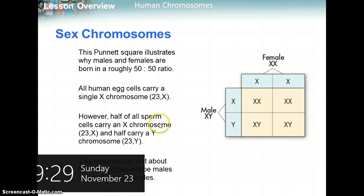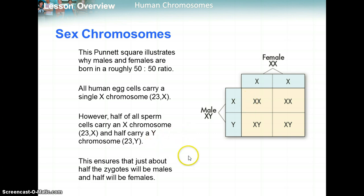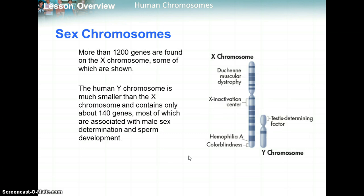If a Y chromosome fertilizes the egg, then you'll have a boy. If an X chromosome in a sperm fertilizes the egg, you'll have a girl. This ensures that about half the zygotes will be males and half will be females.